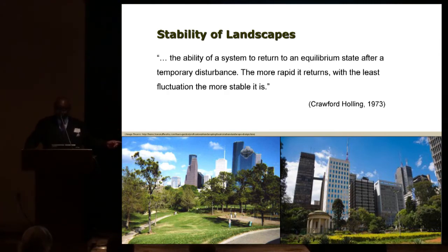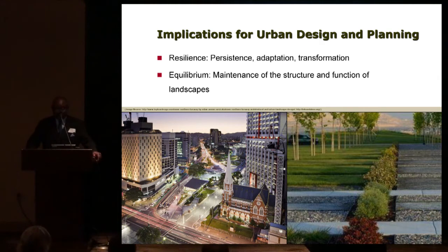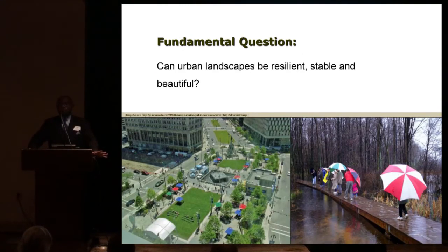This definition of stability is what traditionally ecologists and designers and planners have relied upon, because they want to create landscapes that are stable. Holling suggested that the extent to which we emphasize resilience versus stability has ramifications for our approach. A focus on resilience emphasizes creating systems that are open, adaptable, and transformative, while an emphasis on stability focuses on maintaining the structure and function of ecosystems. So we can ask: can urban landscapes be resilient, stable, and beautiful? Is the pursuit of resilience consistent with the pursuit of stability?